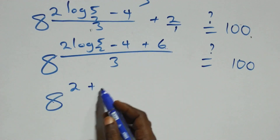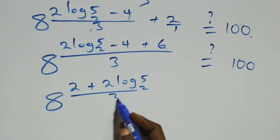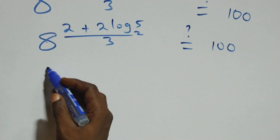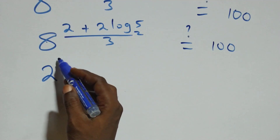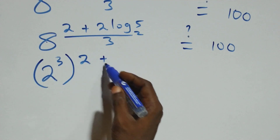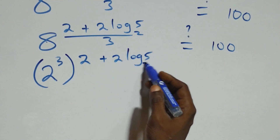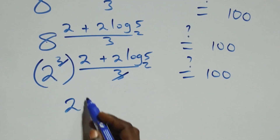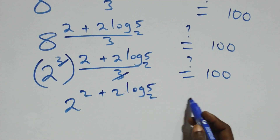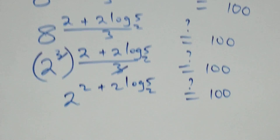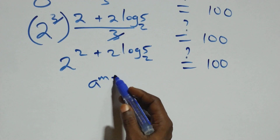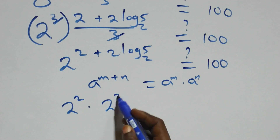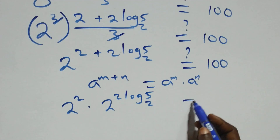We can express 8 as 2 raised to power 3, so we have 2 raised to power 3, which is raised to power (2 plus 2 log₂5) all over 3, equals the right-hand side. The power multiplies: 3 and the denominator 3 cancel each other, leaving 2 raised to power (2 plus 2 log₂5) equals the right-hand side. Applying the index law a^(m+n) = a^m · a^n, we get 2 raised to power 2 times 2 raised to power 2 log₂5 equals the right-hand side.